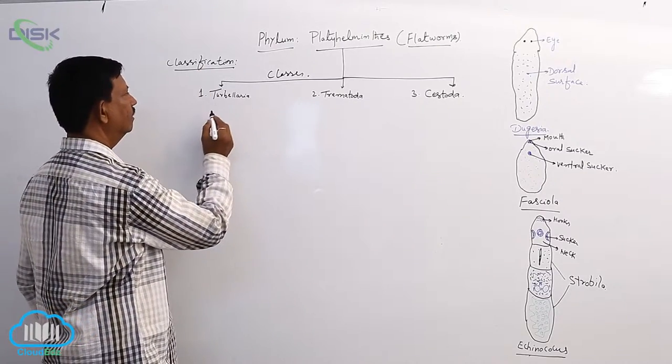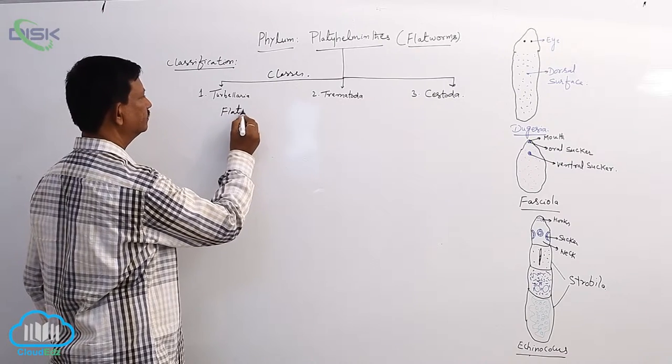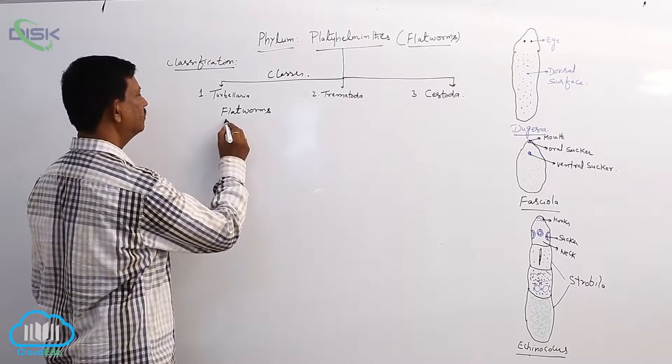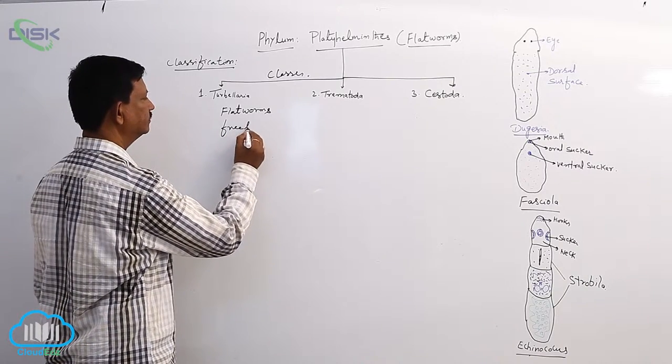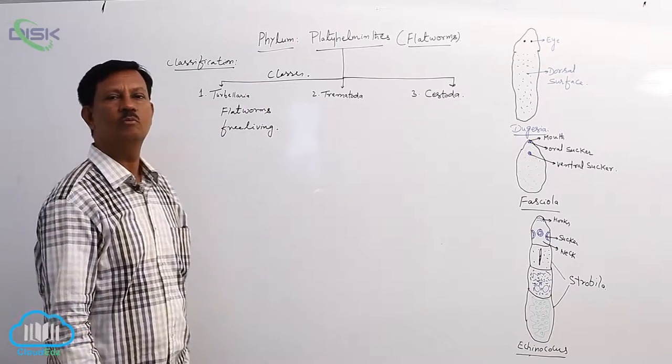Turbellaria animals are commonly known as flatworms. They are mostly free-living animals. They are found in moist soil.